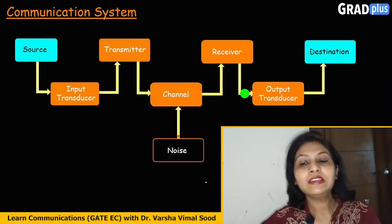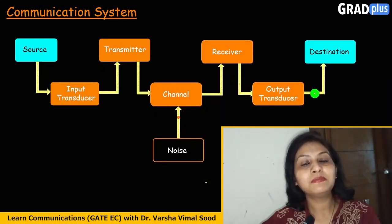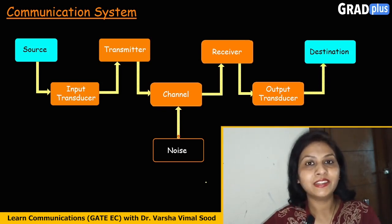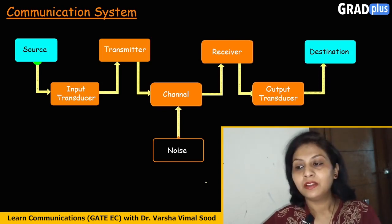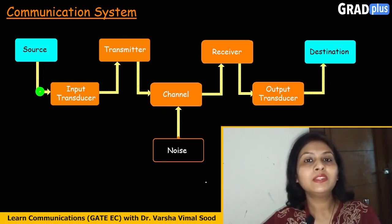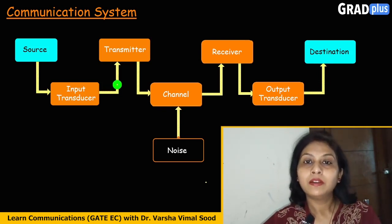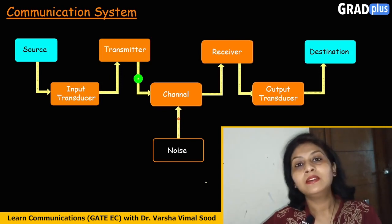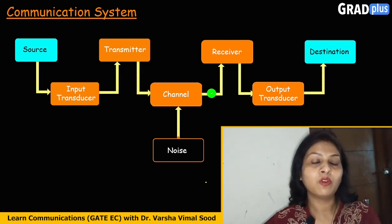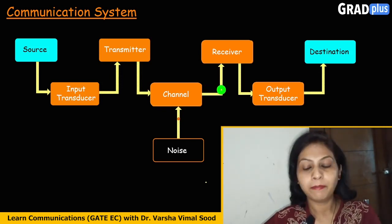This is the general block diagram of a communication system, starting with the source and ending at the destination. Within these two extreme blocks we have a number of blocks, so as to make the transmission of our message efficient and effective.